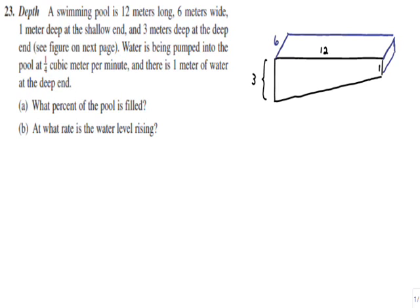The problem says a swimming pool is 12 meters long, 6 meters wide, 1 meter deep at the shallow end, and 3 meters deep at the deep end. I drew a picture to illustrate those dimensions. Water is being pumped into the pool at a rate of one quarter cubic meters per minute, and there is one meter of water at the deep end at the particular moment for which we want to find the related rate in Part B. Part A has nothing to do with calculus — it asks what percent of the swimming pool is filled, which is just a geometry question with a percentage application.